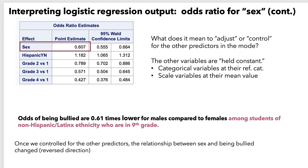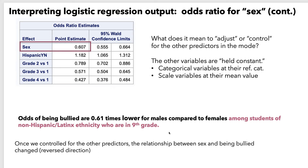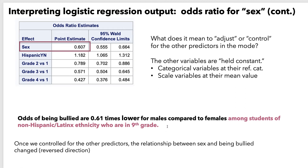Remember that adjusting or controlling for the other predictors in the model means that the other variables are held constant. Categorical variables are held constant at their reference category and scale variables are held constant at their mean value. You may have noticed that the odds ratio for sex is not in the direction we hypothesized — we thought bullying would be lower among females, but here males have a lower odds of bullying compared to females, because we are adjusting for the other predictors. So the odds of being bullied are 0.61 times lower for males compared to females among students of non-Hispanic/Latinx ethnicity who are in 9th grade, meaning the other predictors play a role in the relationship between sex and being bullied.